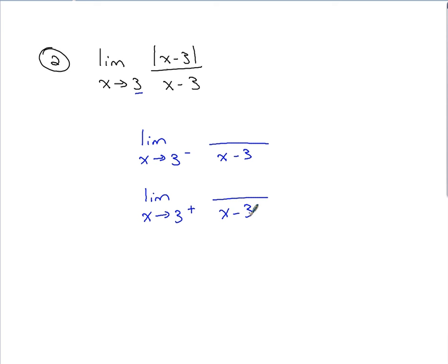But in the numerator, since I'm approaching 3 from the left for this first one, I'm going to take the x minus 3 that was inside the absolute value and apply a negative to it. We're approaching from the negative side. You want to look at it that way. And for the right-hand side, coming in from the positive side, take the absolute value off, and you leave the expression of x minus 3 as is. That's how we set it up.